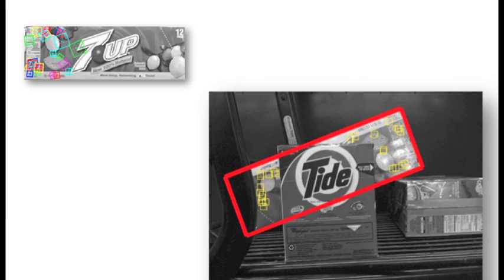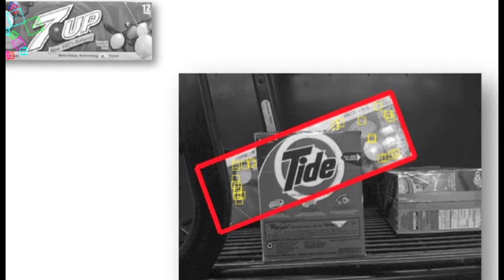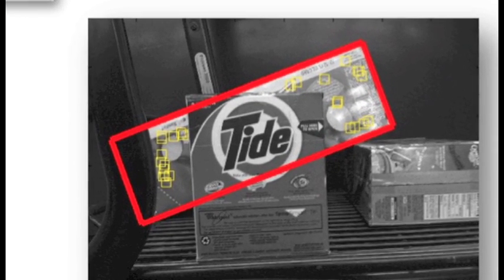In this example, Viper is able to accurately recognize the 7UP despite being largely occluded by the Tide product.